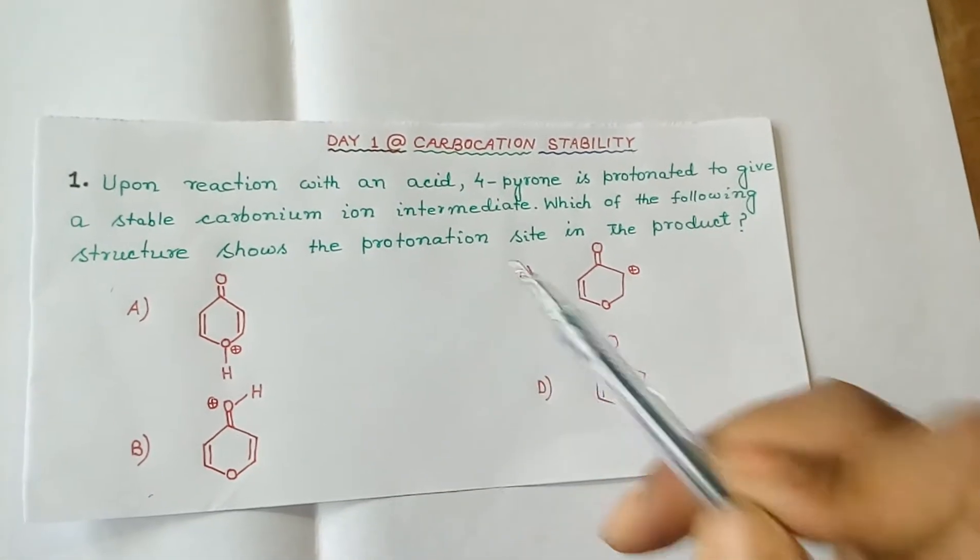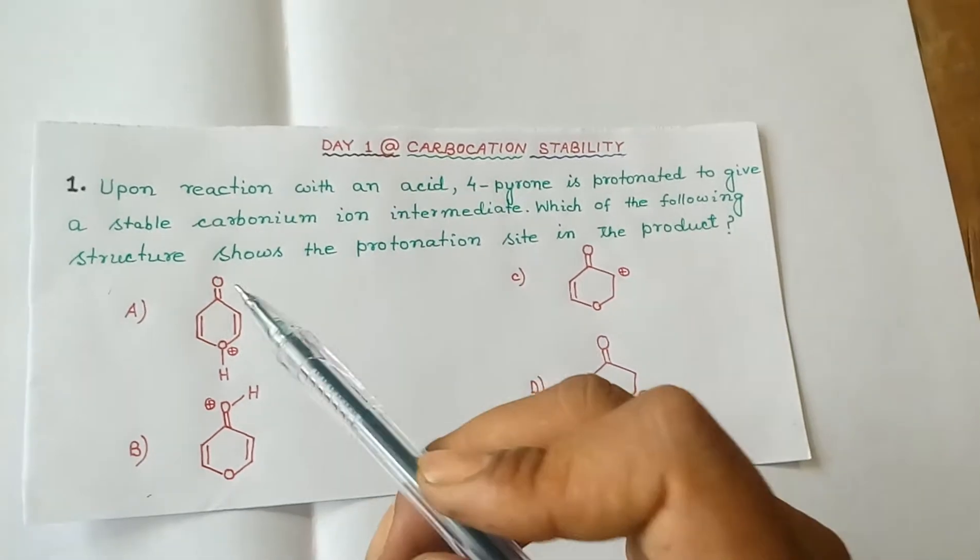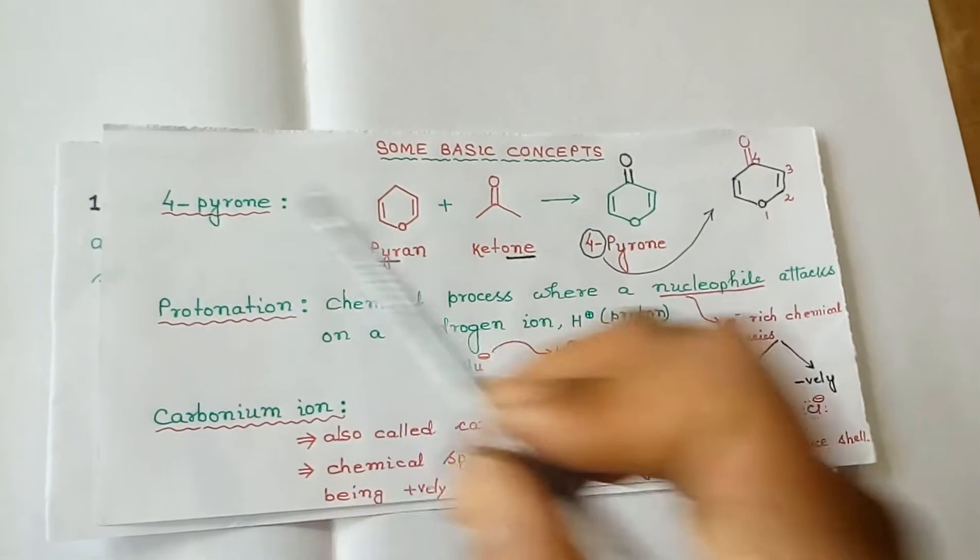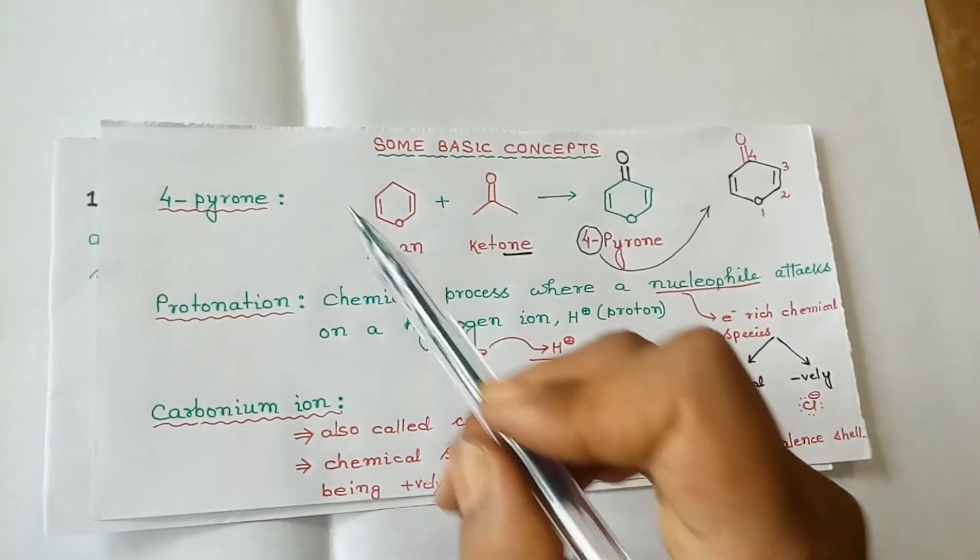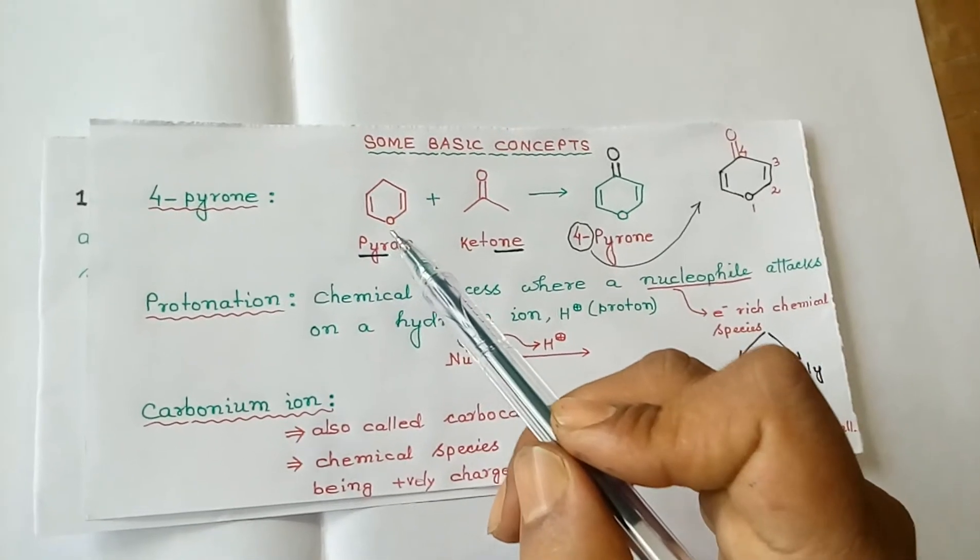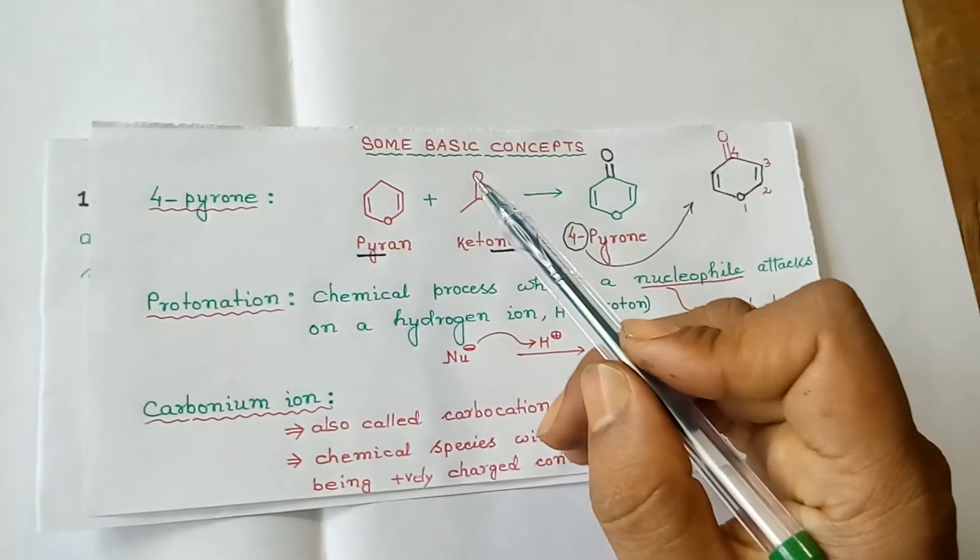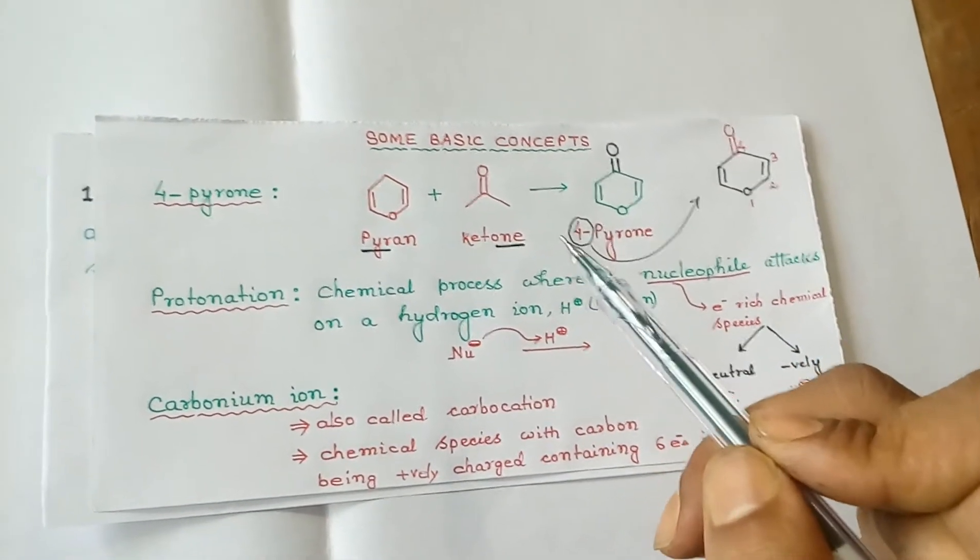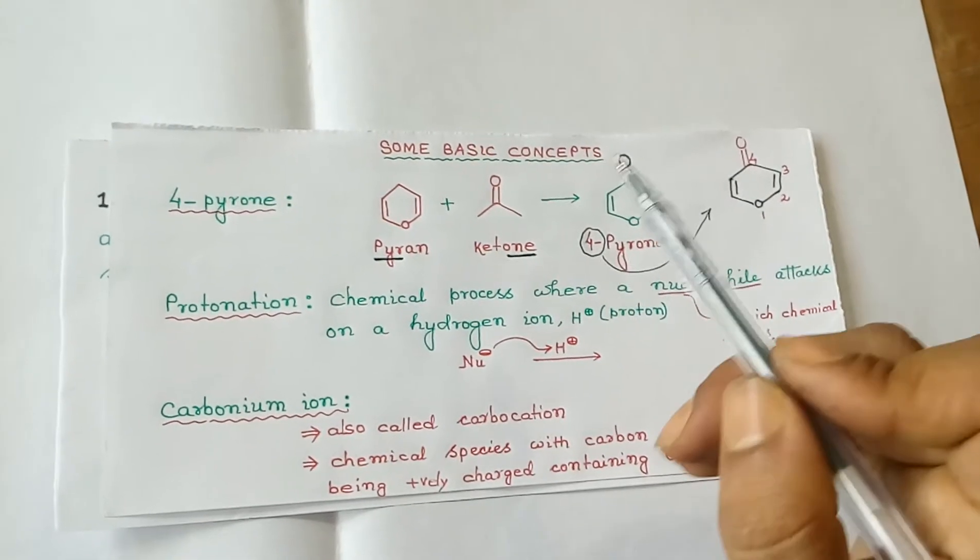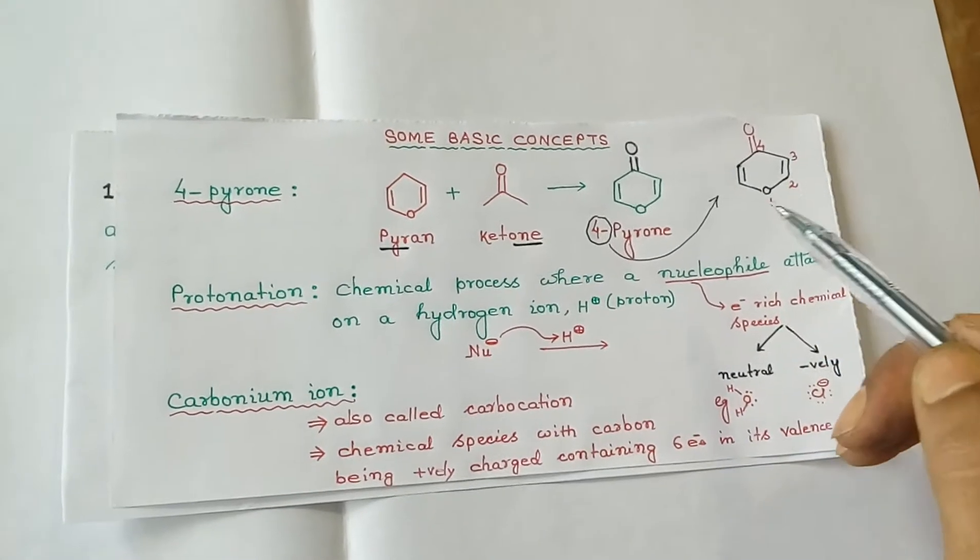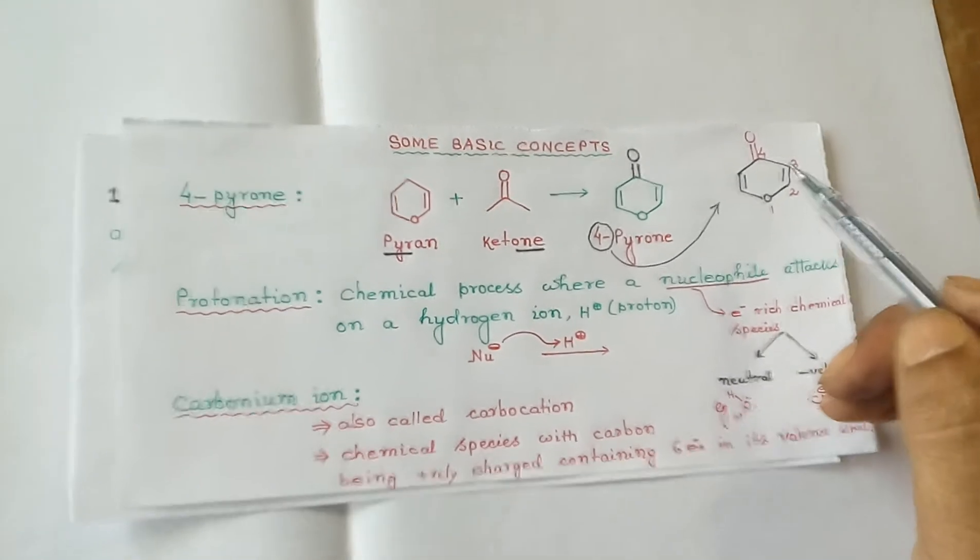Four options are given. What is 4-pyrone? A pyrone is a combination of two words: pyran and ketone. Pyran is a six-membered heterocyclic compound with oxygen as the heteroatom. When combined with a ketonic functional group, we get pyrone. Why 'four'? It's because of the position of the ketonic group. In any heterocyclic compound, we start numbering from the heteroatom: one, two, three, four. At position four, the ketonic group is present, so it is named 4-pyrone.